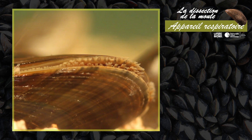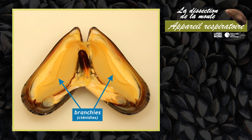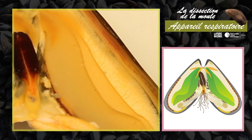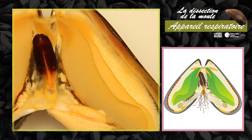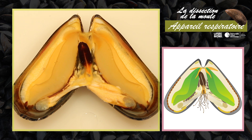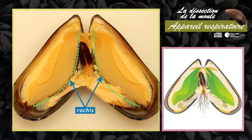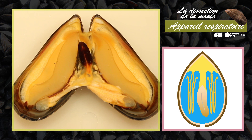Les moules lamellibranches sont des organismes filtreurs microphages. Les branchies ou cténidies jouent un double rôle respiratoire et nutritif. Les branchies sont constituées d'une double rangée de longs filaments ciliés soudés au toit de la cavité paléale sur un axe antéro-postérieur, le rachis. Le long de l'axe branchial, les deux rangées de filaments parallèles adoptent une disposition en W.